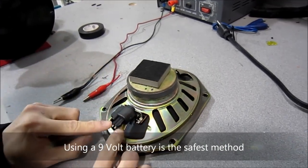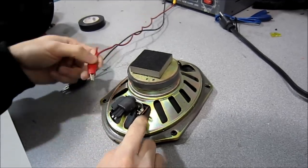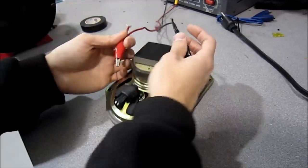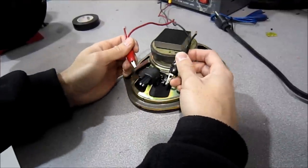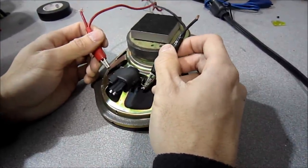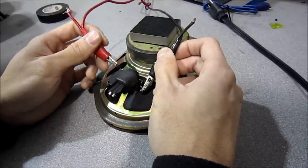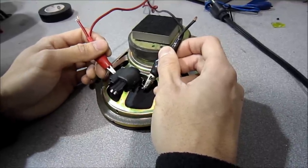So we have white and gray on this speaker. To find out which one's positive, you're going to hook up your positive to one side and your negative to the other. If I hook up negative to gray on this side and then positive to white on this side, we'll see which direction the speaker goes out.